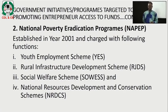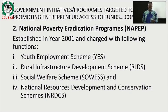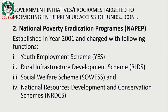Two: National Poverty Eradication Programme (NAPEP), established in 2001, charged with the following functions: Youth Empowerment Scheme, Rural Infrastructure Development Scheme, Social Welfare Scheme, and National Resource Development and Conservation Scheme. These are the various schemes through which government disburses funds in the form of loans and grants to entrepreneurs.